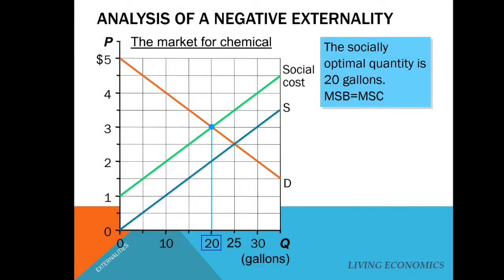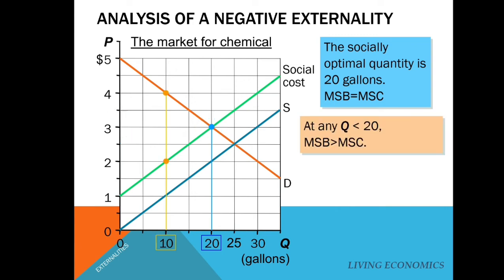What should be the socially optimal level? The socially optimal level is where marginal social benefit equals marginal social cost. Looking at the blue dot, the red demand curve equals the green supply curve — which includes external cost — at quantity 20 gallons and price $3. This is the socially optimal quantity where we account for producers, consumers, and the third party. At 20 gallons, marginal cost is $3 and marginal benefit is also $3.